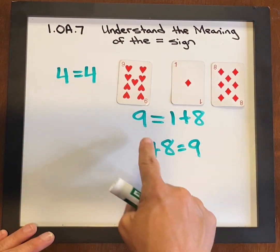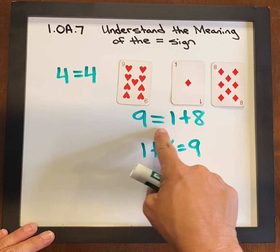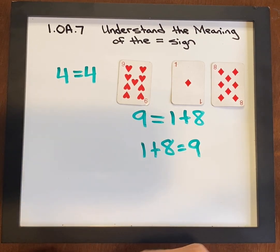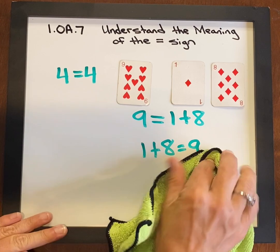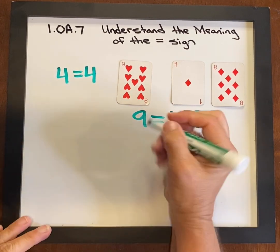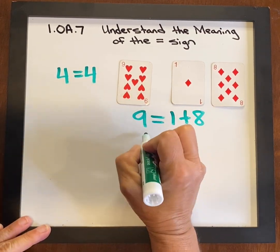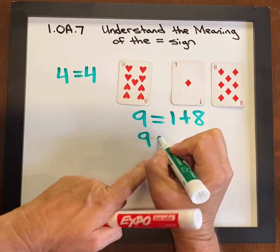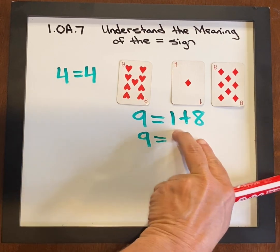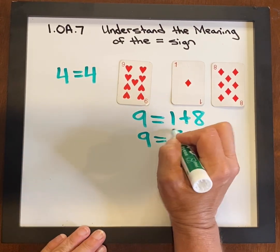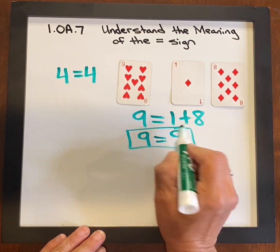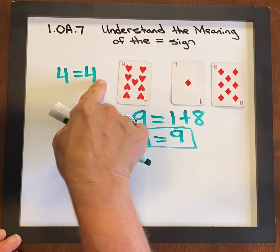The equal sign means "the same as." 9 is the same as 1 plus 8, and 1 plus 8 is the same as 9. You could also prove it: you have 9 on this side, which is the same as the sum of these two. 8 and 1 is 9, and 9 equals 9, just like this.